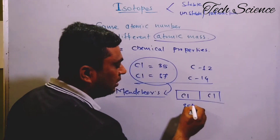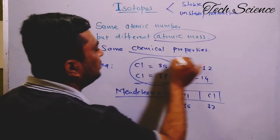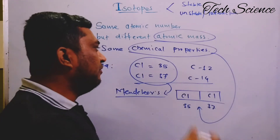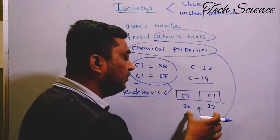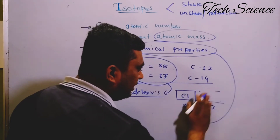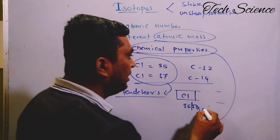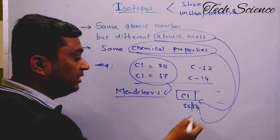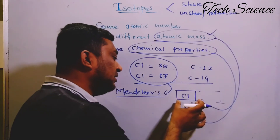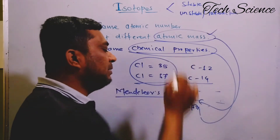If you place chlorine atoms one after another based on increasing atomic mass — one with mass 35 and one with mass 37 — a question arises: if they have the same chemical properties, why place them in different positions? On the other hand, if we place both in a single cell, another problem arises: if they have different atomic masses (35 and 37), they could be considered two different elements based on increasing atomic mass, so how can you place them in the same position?